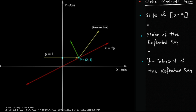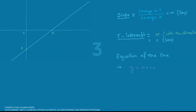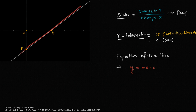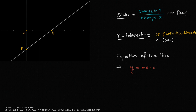Before we do these things, let us try to understand what slope and intercept are. If we are given a line with y and x-axes, the slope is basically the change in y over the change in x — that is, the rate of change of y with respect to x.